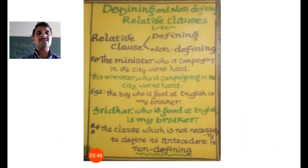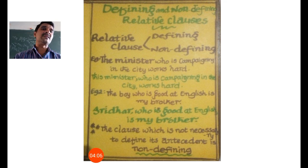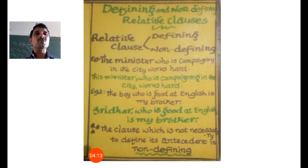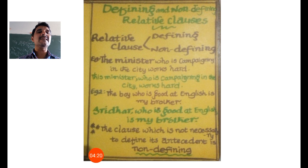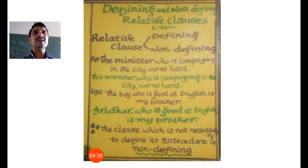Moving on: defining and non-defining relative clauses. A relative clause is of two kinds — defining and non-defining. Consider these examples: 'The minister who is campaigning in the city works hard' and 'This minister who is campaigning in the city works hard.' In both sentences, 'who is campaigning in the city' is the relative clause. But the first sentence is a defining relative clause and the second is a non-defining relative clause.